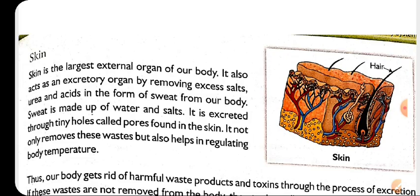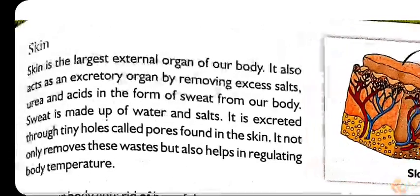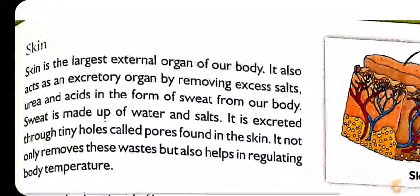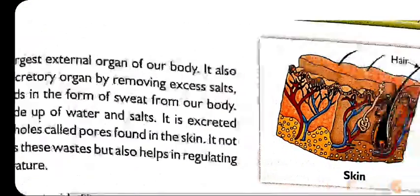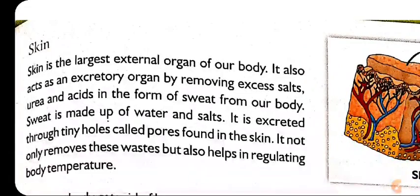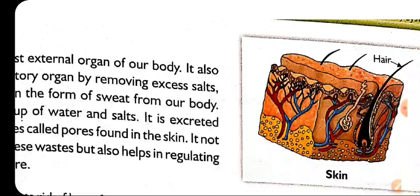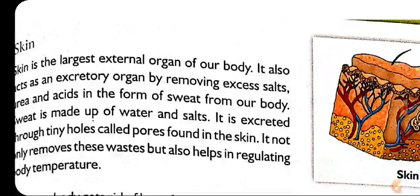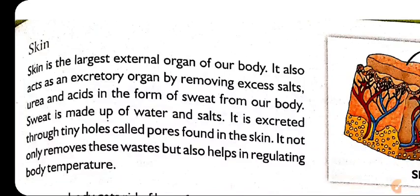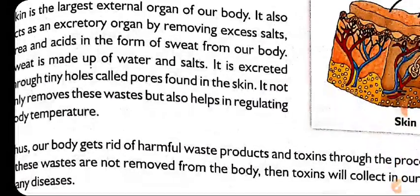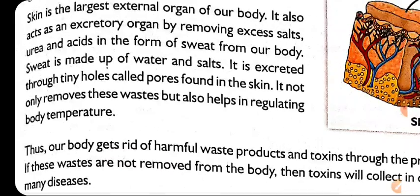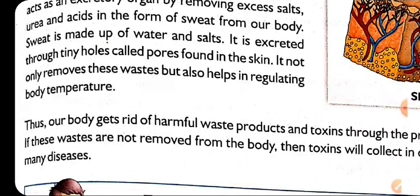The next excretory organ is the skin. Skin helps in the removal of excess salt and uric acid from our body in the form of sweat. Sweat is made up of water and salts, and it exits through the tiny holes called pores present in our skin. When sweat evaporates and dries off, our body also cools down. So skin also helps in regulating body temperature.